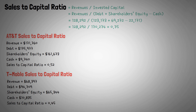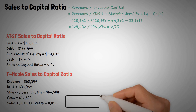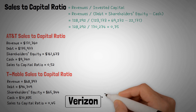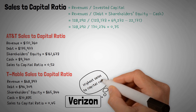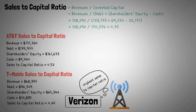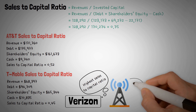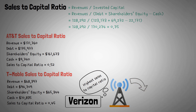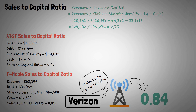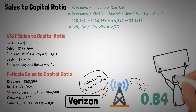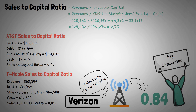Verizon carries the highest sales-to-capital ratio compared to all three of the big telecoms. If we look at their ratios and compare them to the industry average of 0.84, all three are lower than that average. Let's also look quickly at the sales-to-capital ratio of some bigger names in the market — the largest market caps.